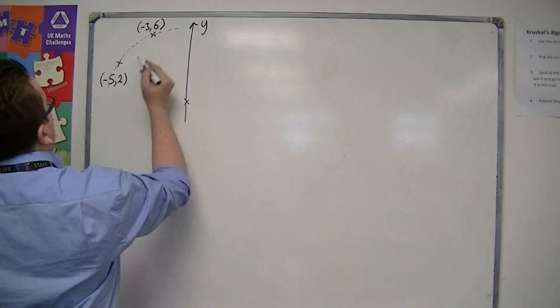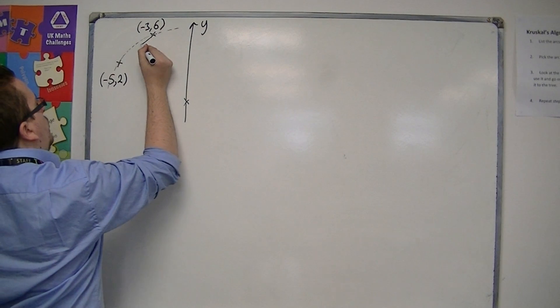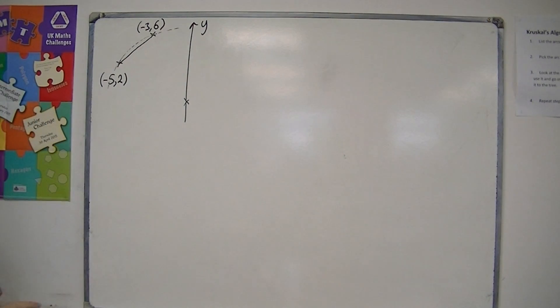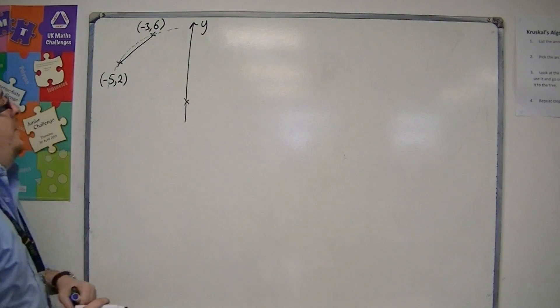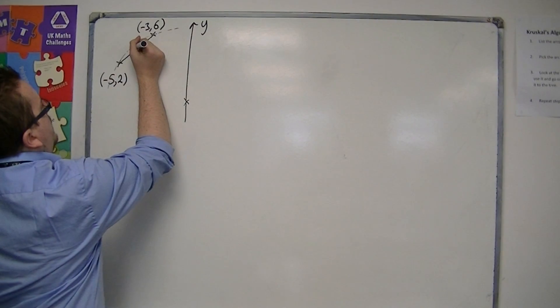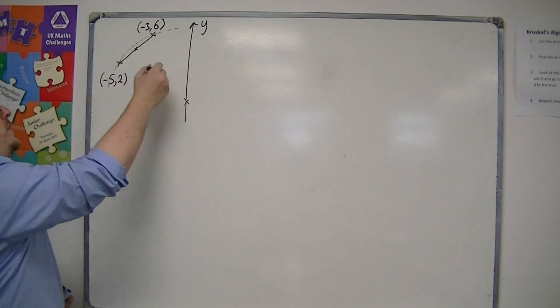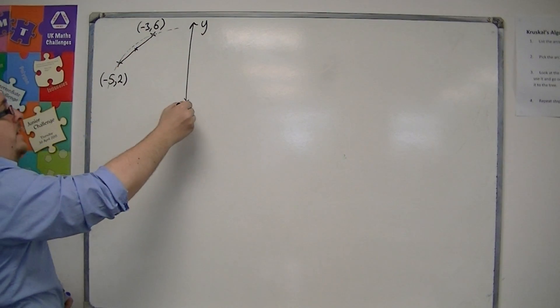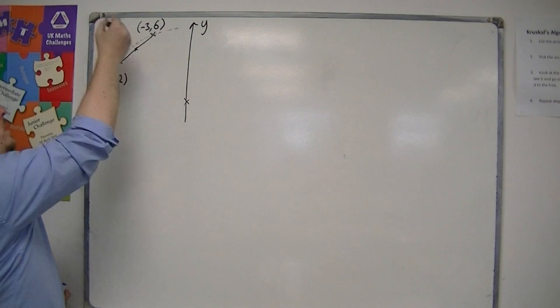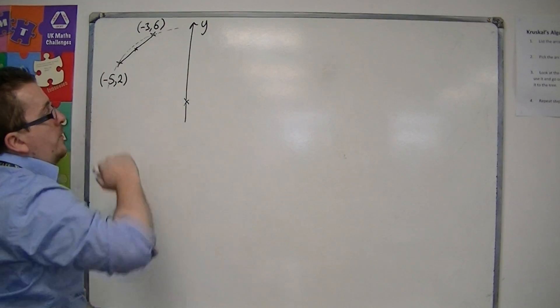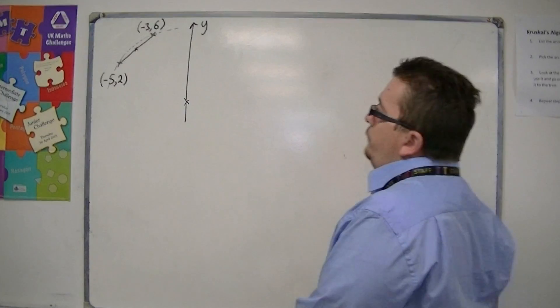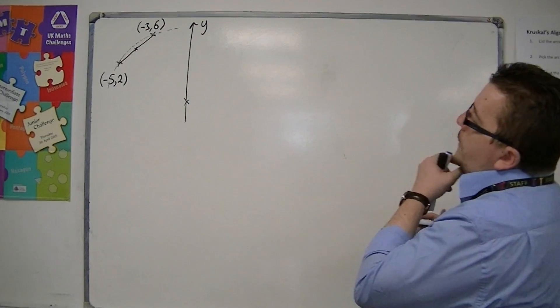So if we look at this chord, then there's a couple of things that we want to know. First of all, we want to be able to find the midpoint. Because ultimately, we want to find the perpendicular bisector that travels through this point, which will tell us where we are on the y-axis. So we need to find the midpoint.